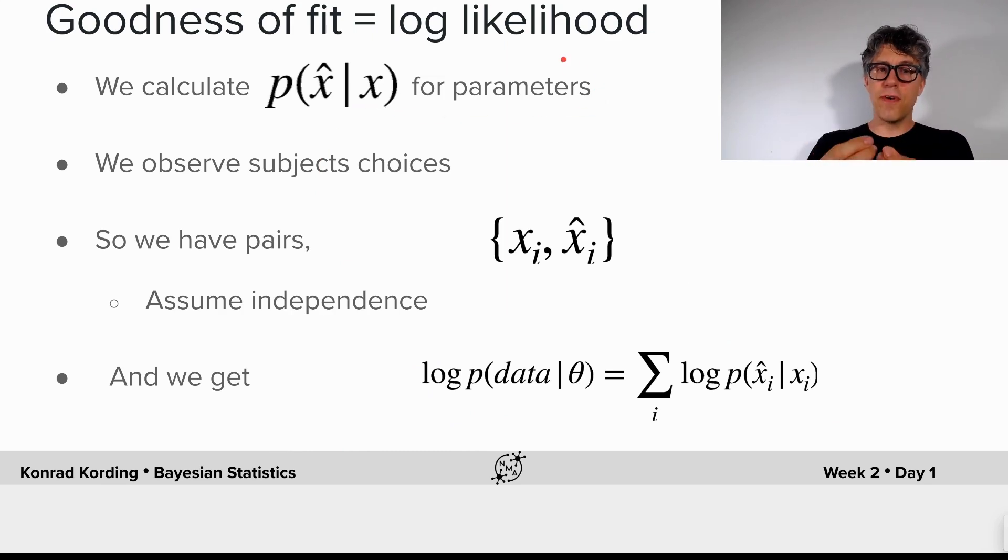We then observe subjects' choices. So we have pairs, what we showed and what they chose, and we will assume independence. And then we will get the log of the probability of the data given the parameters of our model as the sum over all the trials of the log of the probability of the choice in trial i given the stimulus in trial i.